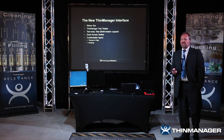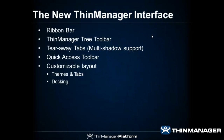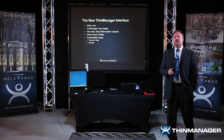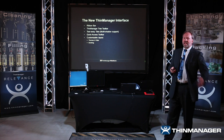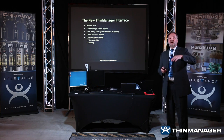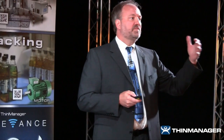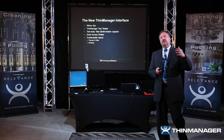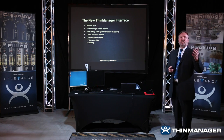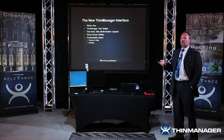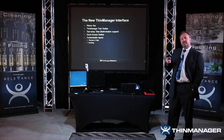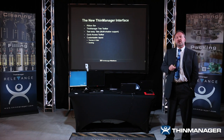The significant change is in the interface. If you're familiar with Excel, we've added a ribbon bar across the top — select the menu items and you'll get different icons to select your function. We've created a ThinManager tree toolbar on the left-hand side, similar to Outlook. The tree is broken into segments: ThinServer, Terminal, DisplayServer, DisplayClient, User or TermSecureUser, and VMware Virtualization. Relevance users also get a new Locations segment. Touching an item in the toolbar lets you work with menu items and ribbon bar functions.